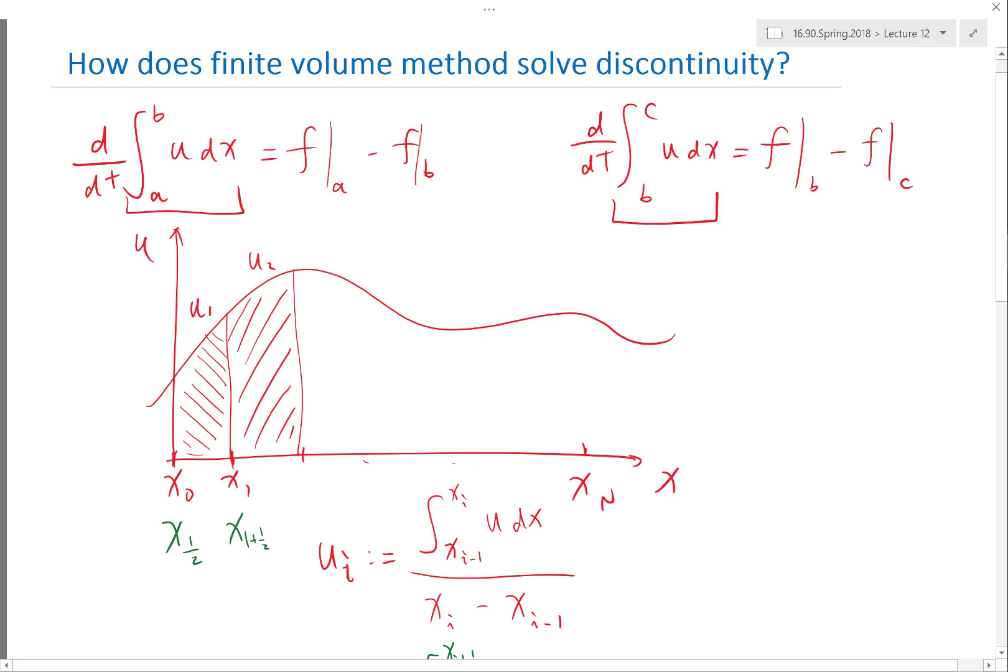We know ddt, but it doesn't tell me. I would only know, even if I know ddt, I would only know the ddt of how the average U is going to increase or decrease within the point, right? I still don't know the value of U at these points.